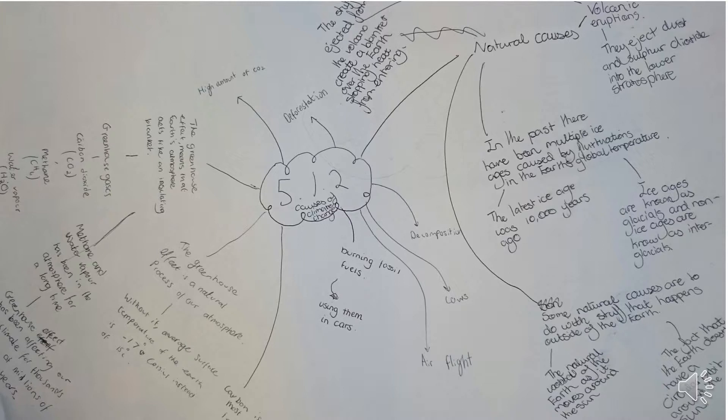Carbon is absorbed by surface water and also given back through degassing. Some carbon in the ocean will then be stored as sediments, and over a period of time will slowly be locked in or sequestered — which is a very, very slow transfer.